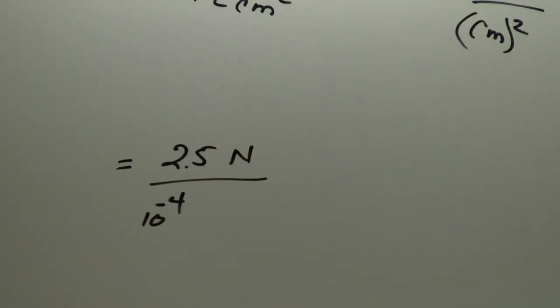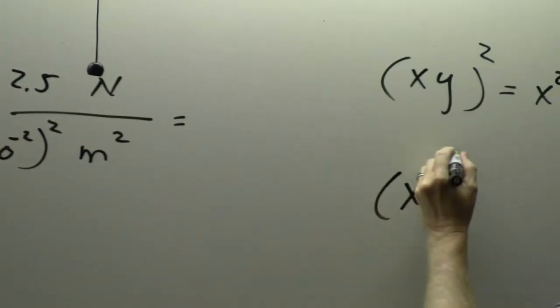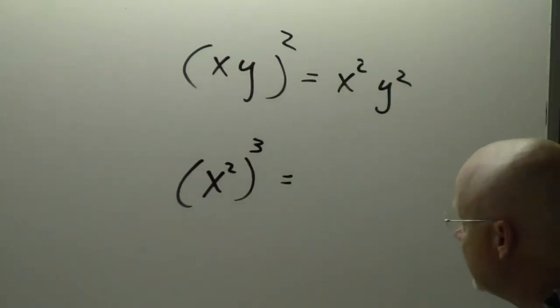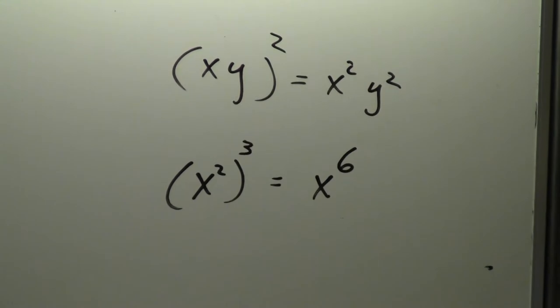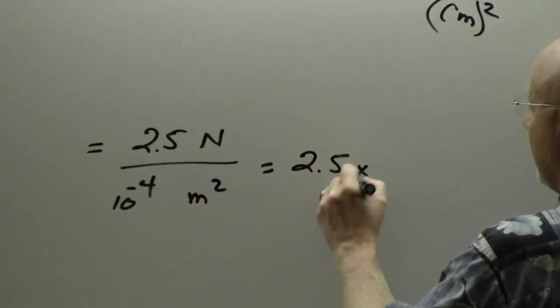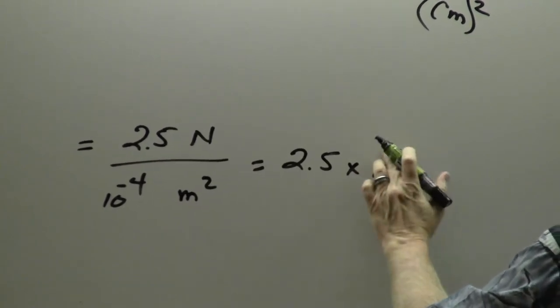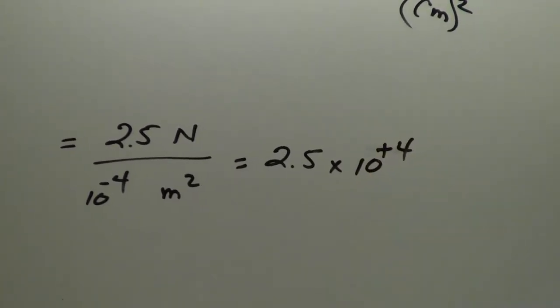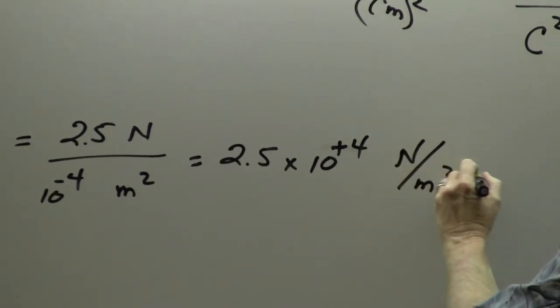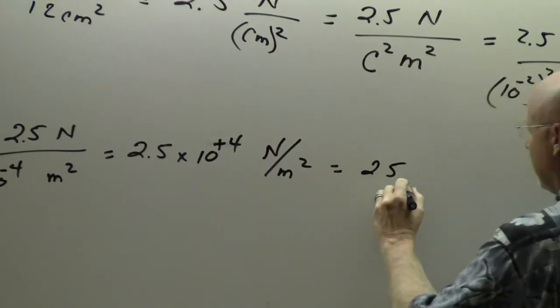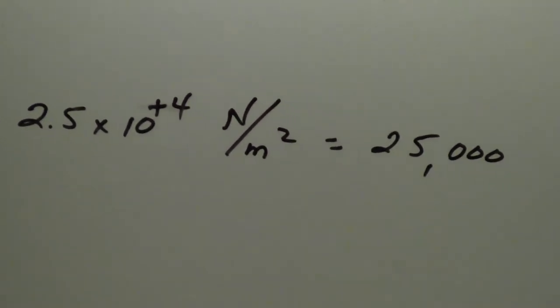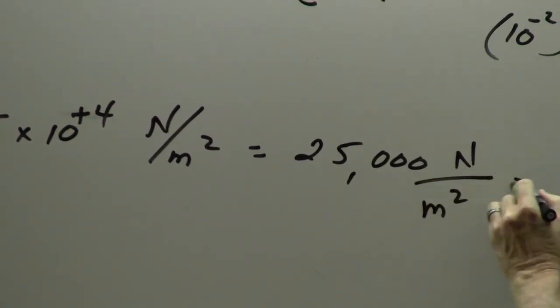Remember your algebra: if you had x squared raised to a power of 3, you would multiply the exponents together — so 2 times 2 is 4. Moving 10 to the minus 4 upstairs makes it 10 to the plus 4. So 2.5 times 10 to the 4 — move it four places — that's 25,000 Newtons per square meter.